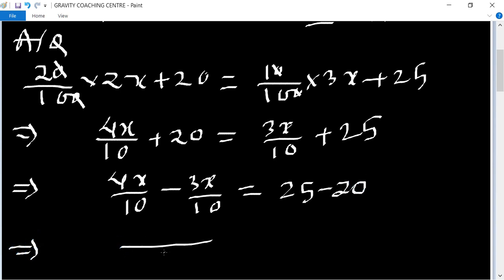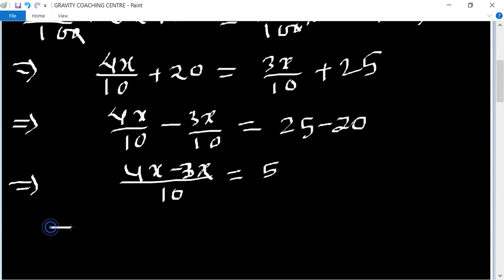The LCM is 10, no change in denominator, so 4x minus 3x equals 5. This implies that x equals 50. Hence, the required smallest number equals 2x.